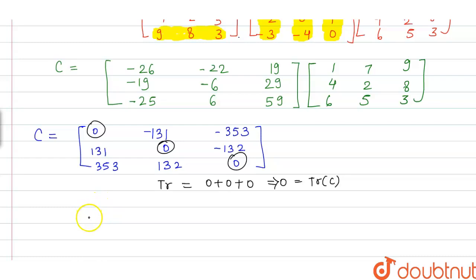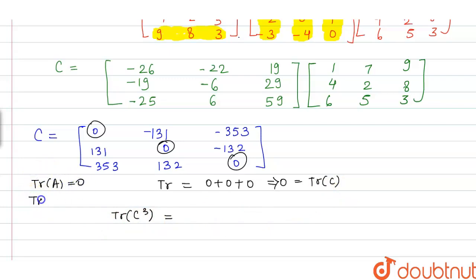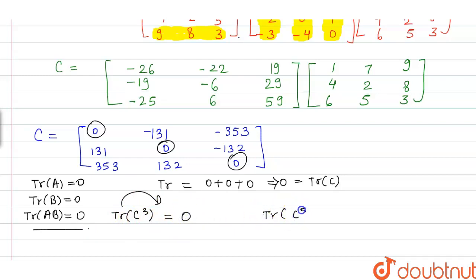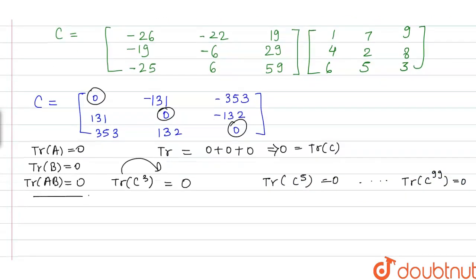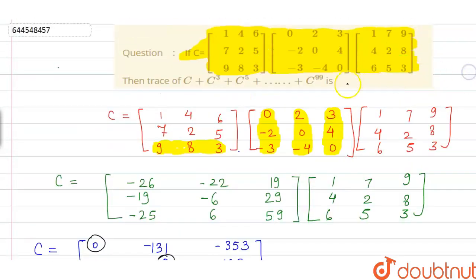Now we need to find the trace of C + C³ + C⁵ + ... + C⁹⁹. We know that if a matrix has trace 0, any power of it also has trace 0. Therefore, the trace of C³ is 0, trace of C⁵ is 0, and this continues all the way to C⁹⁹. Adding all these traces together gives 0, so the answer to the given problem is 0.